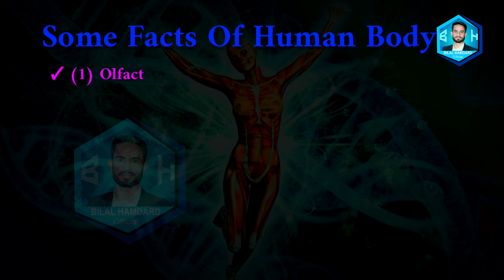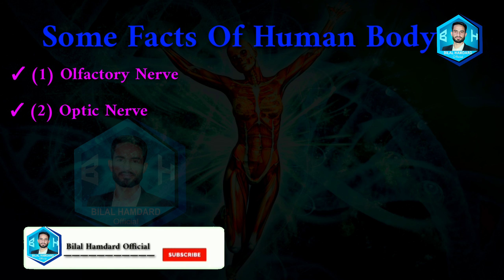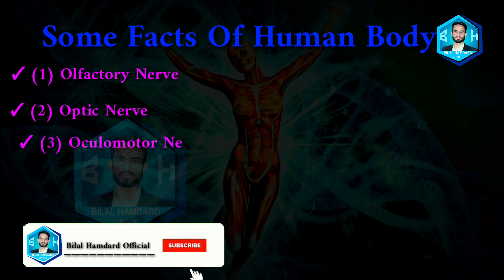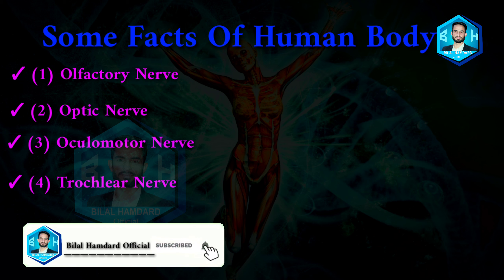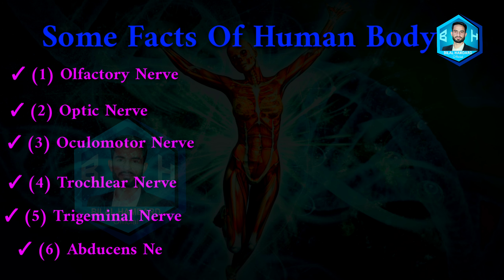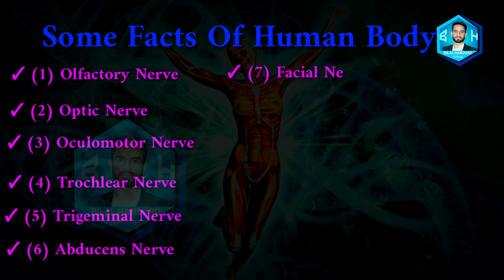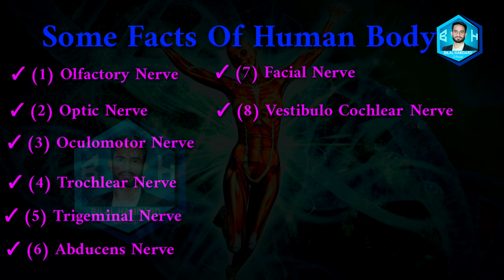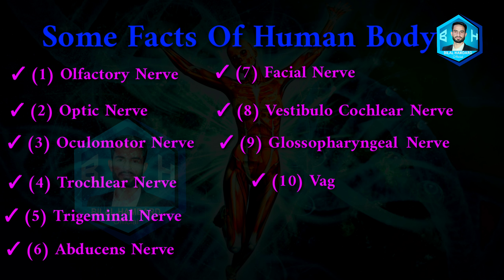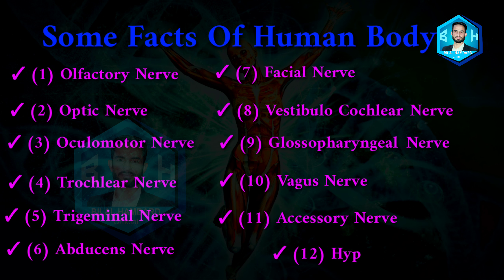The 12 cranial nerves are: 1) olfactory nerve, 2) optic nerve, 3) oculomotor nerve, 4) trochlear nerve, 5) trigeminal nerve, 6) abducens nerve, 7) facial nerve, 8) vestibulocochlear nerve, 9) glossopharyngeal nerve, 10) vagus nerve, 11) accessory nerve, 12) hypoglossal nerve.